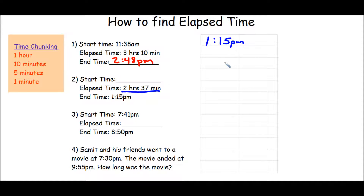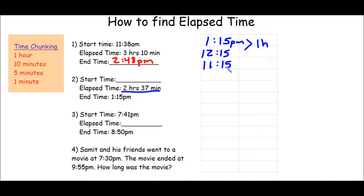If I take away one hour from 1:15 PM, I'm going to end up with 12:15 PM. Make the connection — that's one hour. If I take away another hour, I'm going to end up with 11:15, and this time, since we crossed over 12 o'clock going backwards from PM, this is going to change to AM. Make your connection — one hour. We're done with that part.